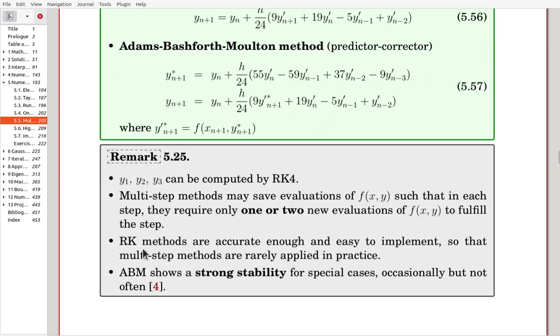RK methods are accurate enough and easy to implement, so multi-step methods are rarely applied in practice. Runge-Kutta methods are really good, so in reality, ABM is not much used. ABM shows strong stability for special cases, occasionally, but not often.